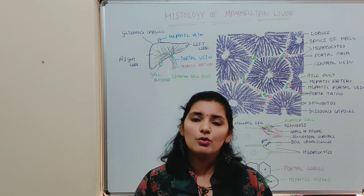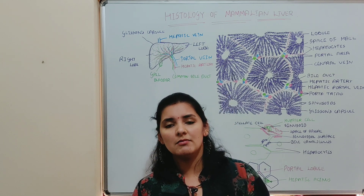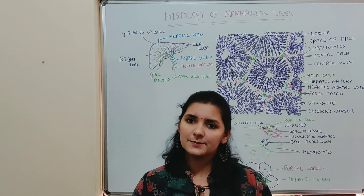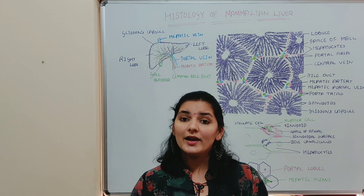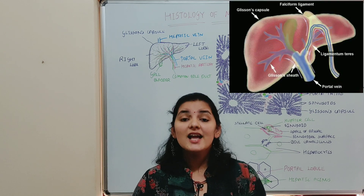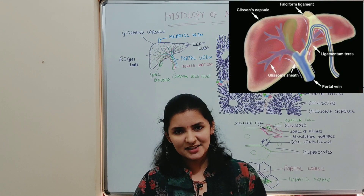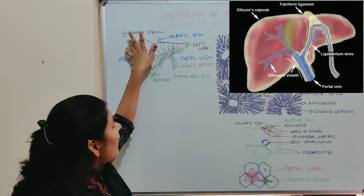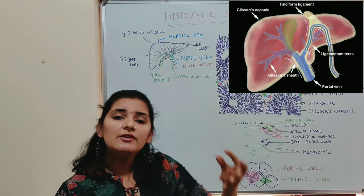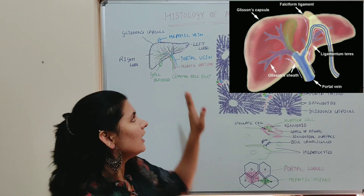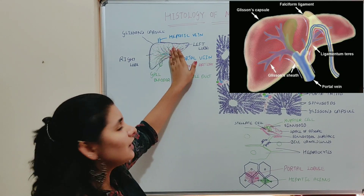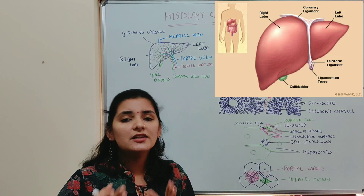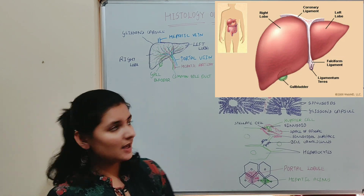I will explain these functions — how bile juice is conveyed to the duodenum, how it stores nutrients, and how it detoxifies harmful substances — while explaining the histological structure itself. Liver is covered by a connective tissue capsule called Glisson's capsule. Part of this connective tissue extends into the parenchyma or interior of the liver as septa or trabeculae, which divide the liver into mainly two lobes.